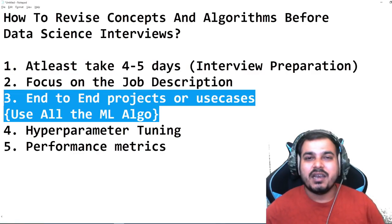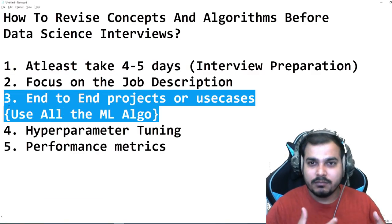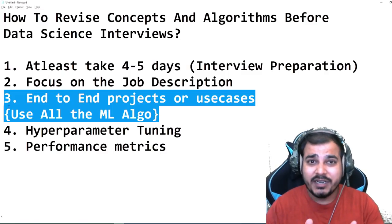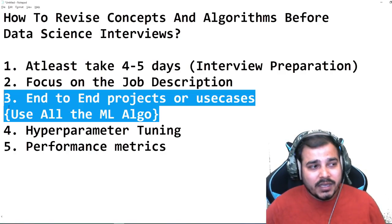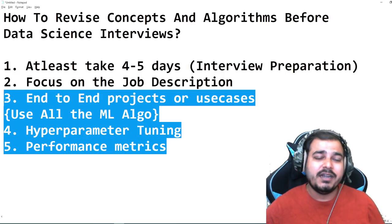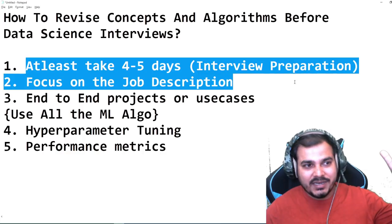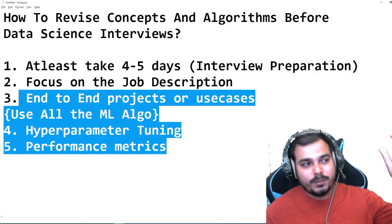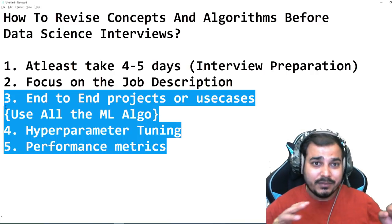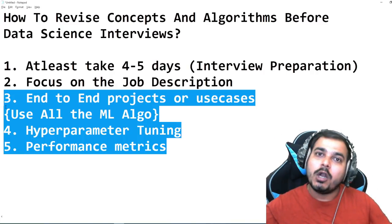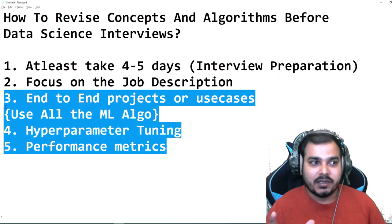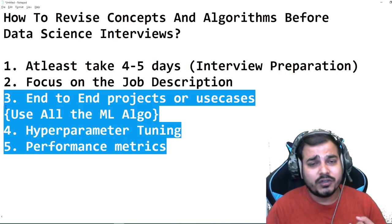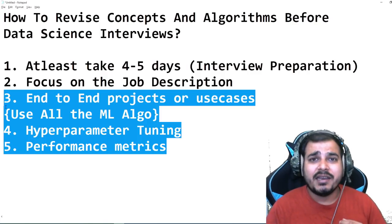Understanding performance metrics and hyperparameter tuning makes learning machine learning algorithms much easier, because machine learning algorithms are all about mathematics. I've already created all the videos covering the math for all machine learning algorithms. Also, don't just focus on ML — try with deep learning algorithms too, whether ANN, RNN, CNN, for classification problems, vision use cases, or anything else. Always focus on performance metrics, which is very important.